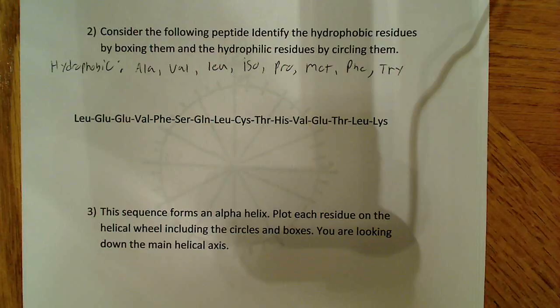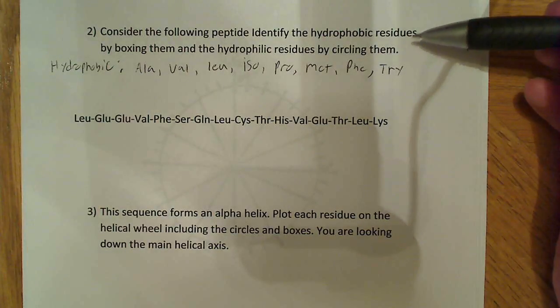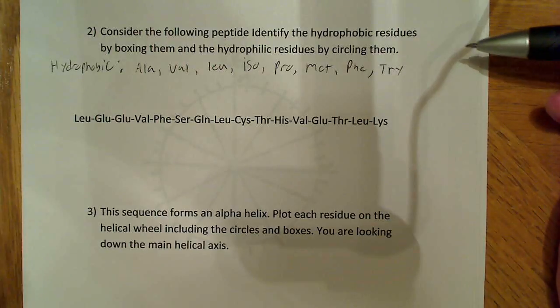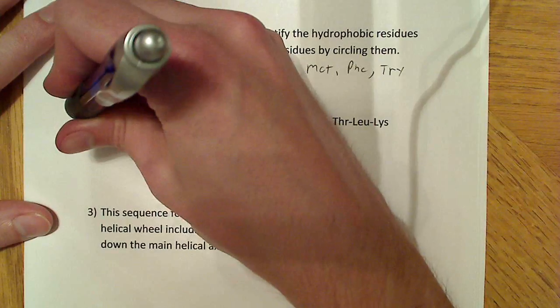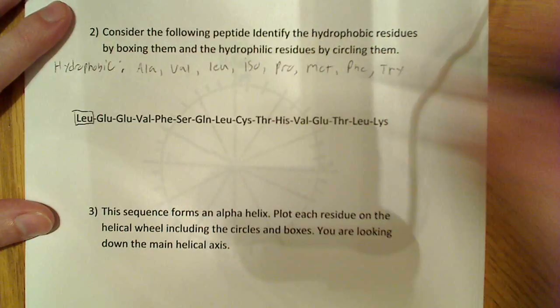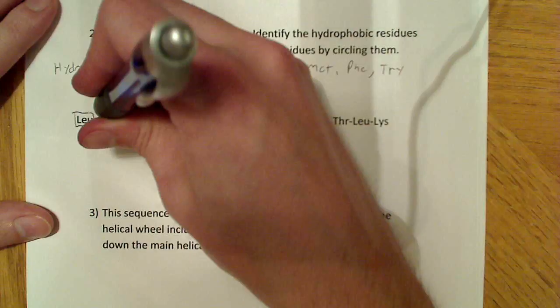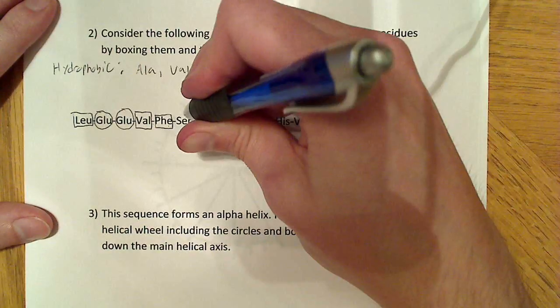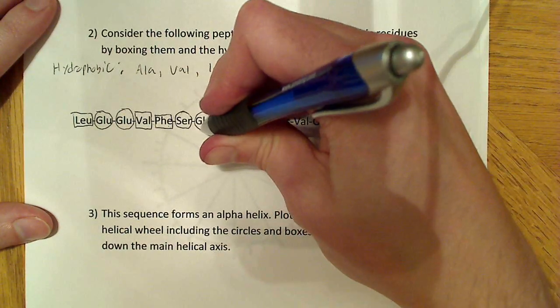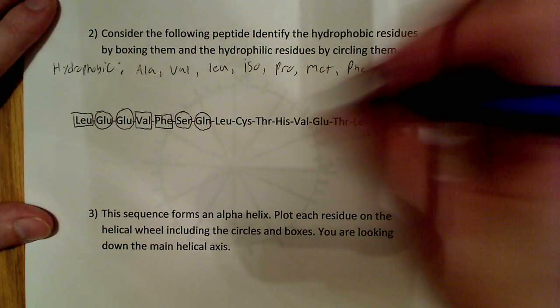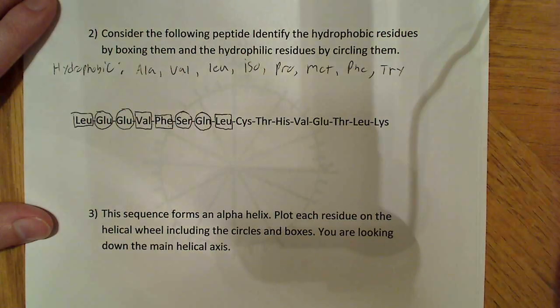So, those are the hydrophobic amino acids. Now, what the problem asks us to do is put a box around the hydrophobics, and a circle around the hydrophilics. Okay, well that's easy enough, because what we'll say here is, okay, leucine. Well, that's one of our hydrophobics, so it gets a box. GLU, that's a hydrophilic, so that's going to get a circle. Valine, that's a hydrophobic. Phenylalanine, that's a hydrophobic. Serine, hydrophilic. Leucine, that also is hydrophobic.